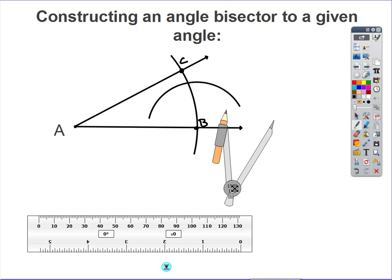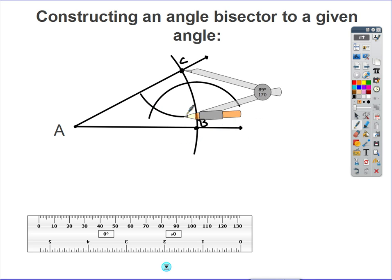Without changing the width of the compass, let's place the point of my compass on point C. We're going to make that exact same arc, making sure that each of the two smaller arcs that we have in the middle cross twice. Without changing the span, I'm going to rotate now and make sure that both arcs intersect each other twice.